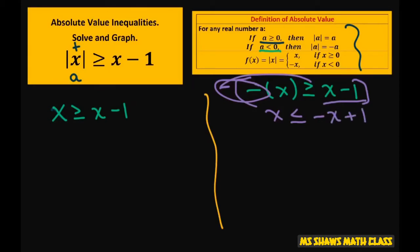So for this one, we're going to subtract x from both sides. You get 0 is greater than or equal to negative 1. This doesn't make sense, so this one's no solution.